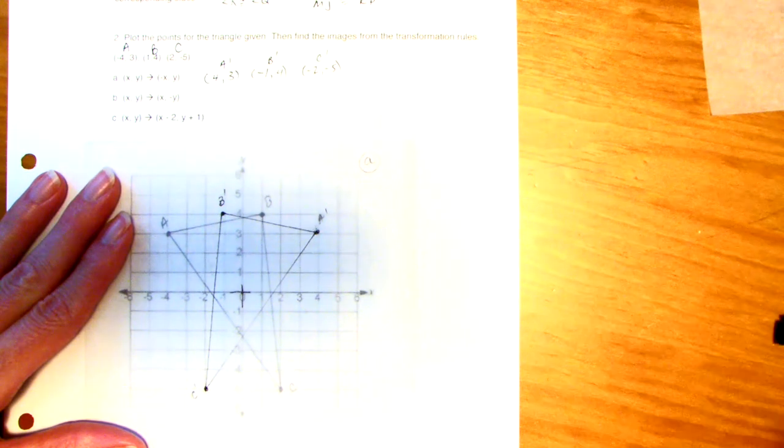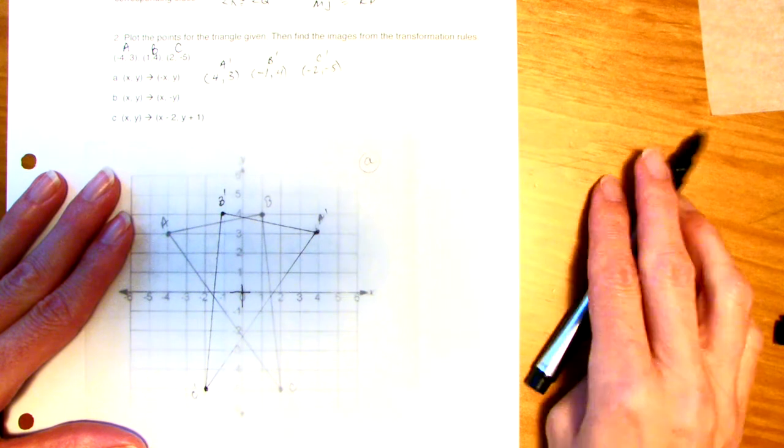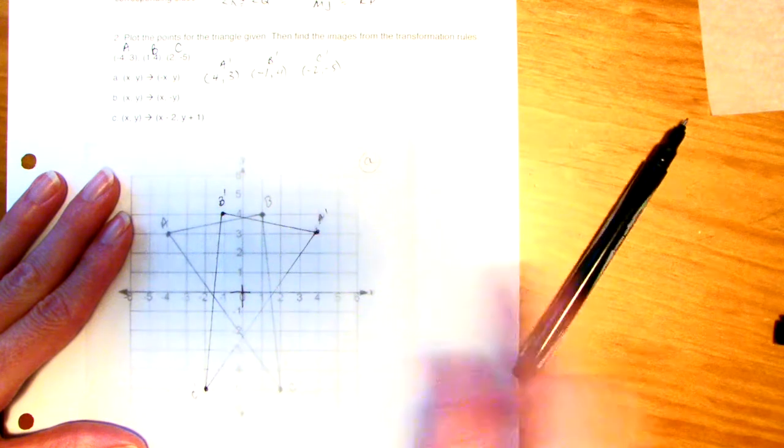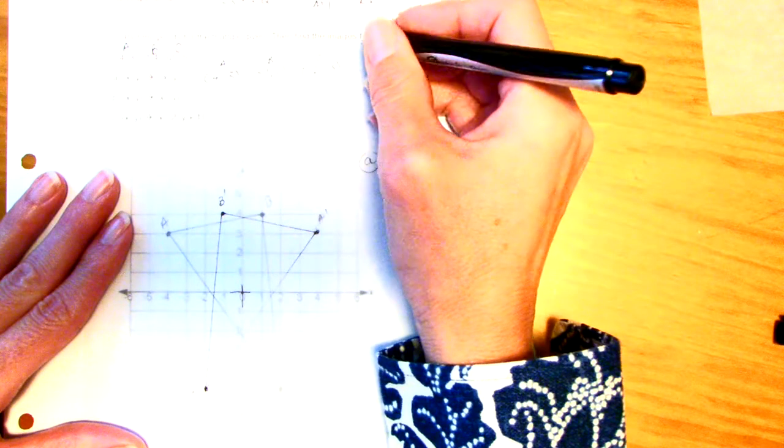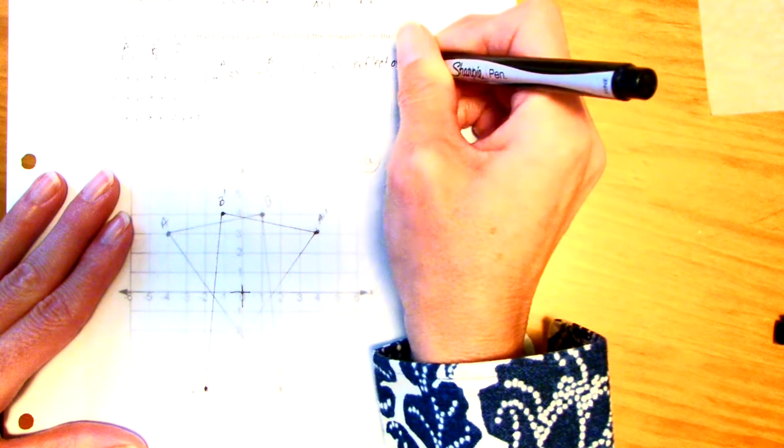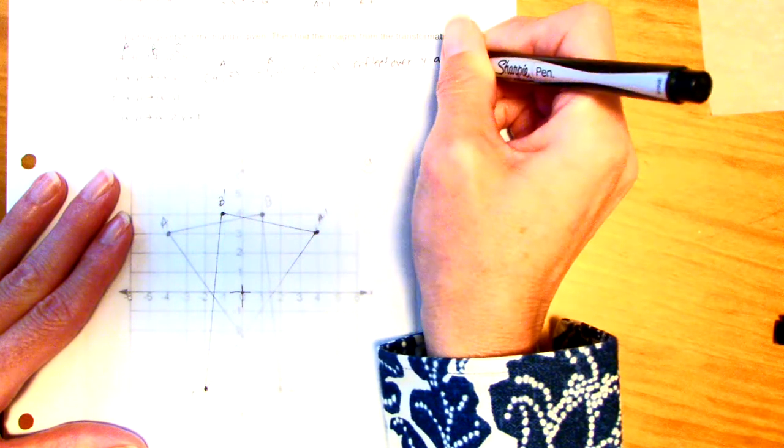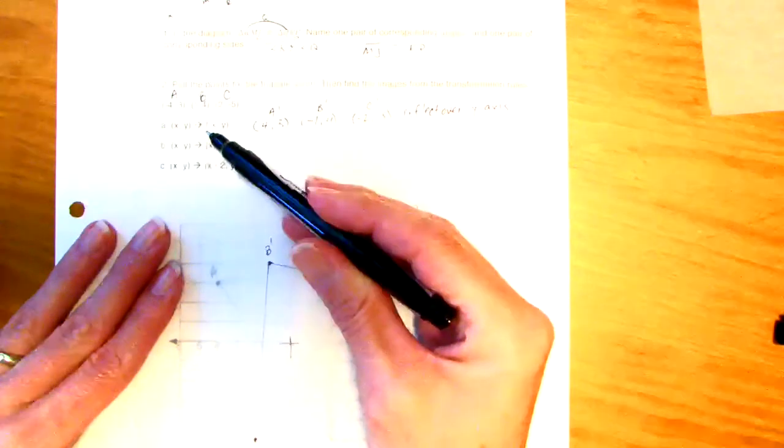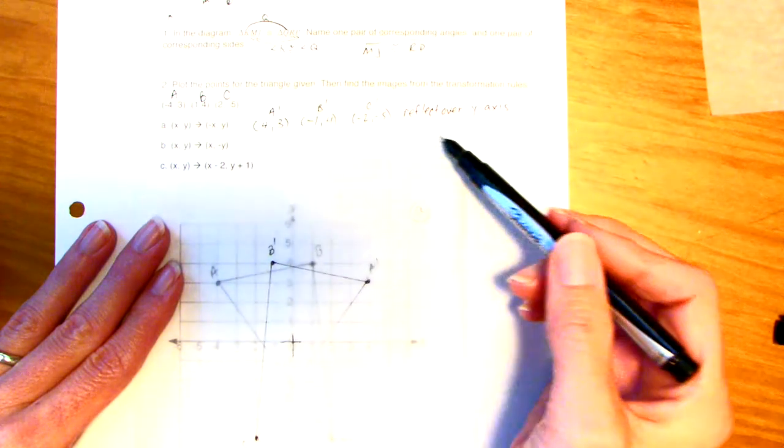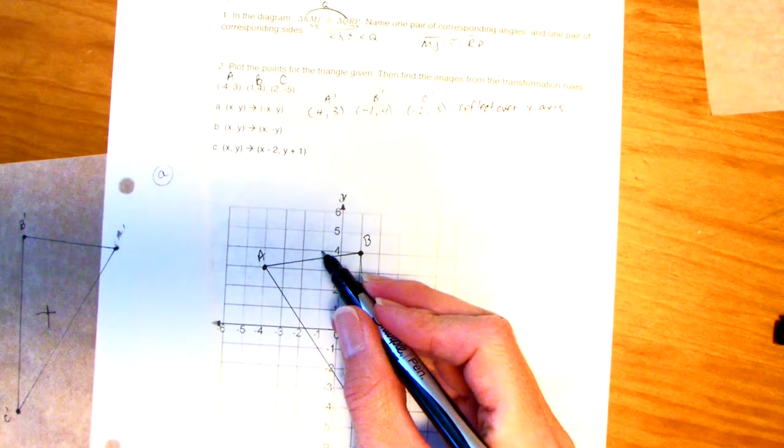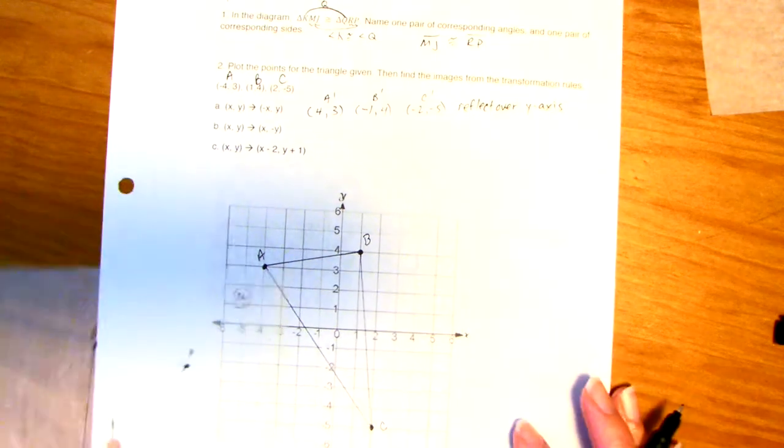That does look like it is a reflection. Do you see how the Y axis is kind of like right in the middle and each point reflects over? This is a reflection over the Y axis. When you see this rule, XY goes to negative XY, that reflects over the Y axis. If I have a point right here, the reflection over the Y axis will be right here. Just the X value changed.